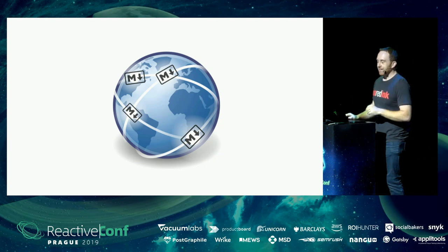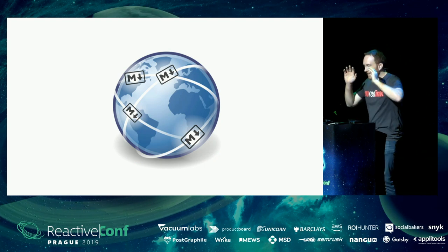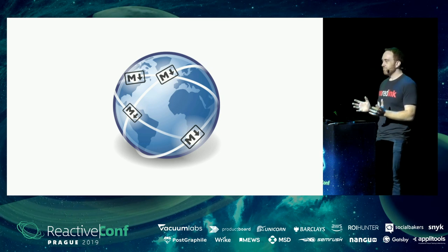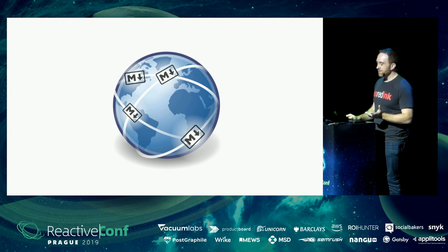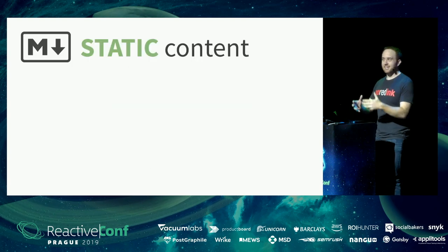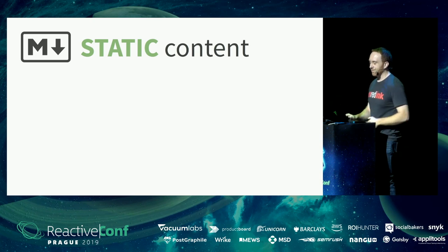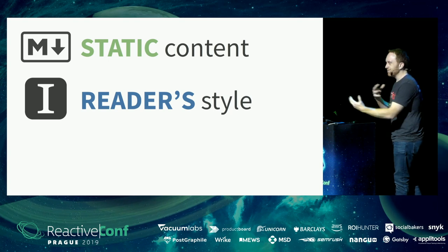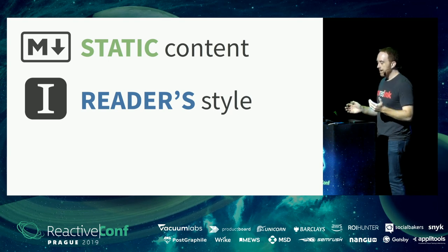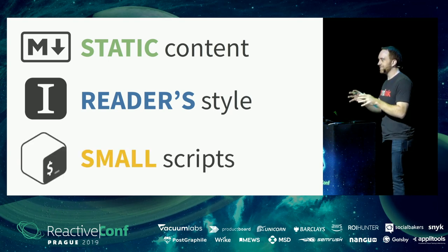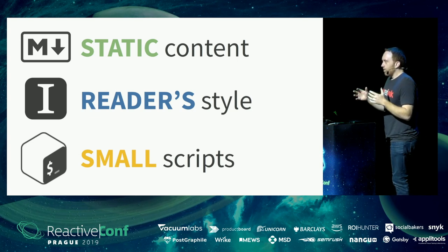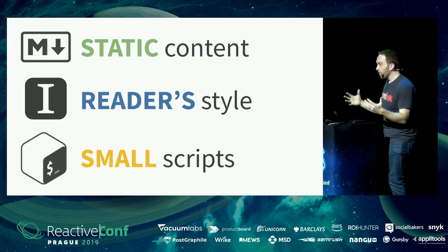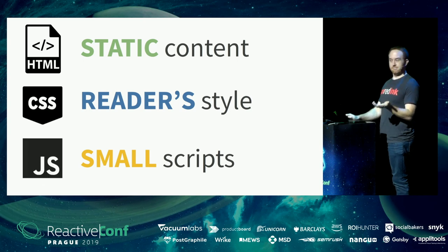I know what you're thinking — whoa, dude, you've gone way off the rails here. What are you even talking about? All of these technologies are being used for the opposite of what they were designed for. Markdown is for static content, not dynamic content, not user interfaces. Instapaper — the whole point is that it's the reader's style, not the author's, and now you're using it to style an application. And bash is for small scripts, not for building entire applications. There's no chance this is going to become the thing that takes over the world.